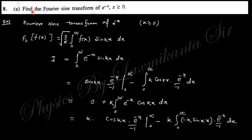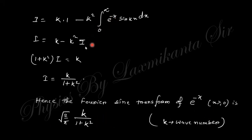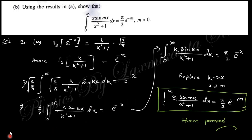The next question asks to find the Fourier sine transform. The Fourier sine transform is defined as √(2/π) ∫₀^∞ f(x)·sin(kx) dx, where x and k are complementary variables. We take this integration by parts — sine is treated as the derivative part and the other function is integrated. Taking the by-parts result, we obtain the intermediate expression, and finally the Fourier sine transform of e^(−x).